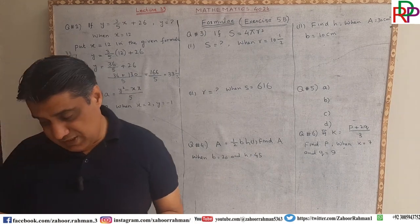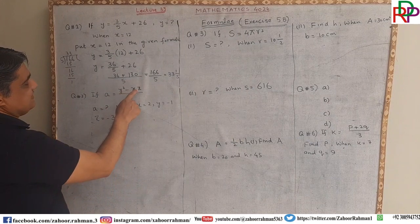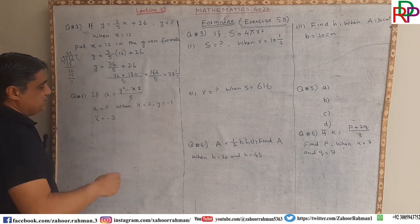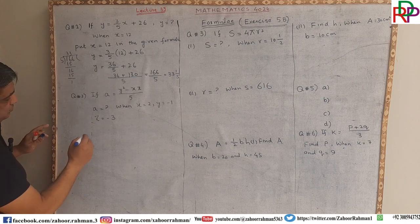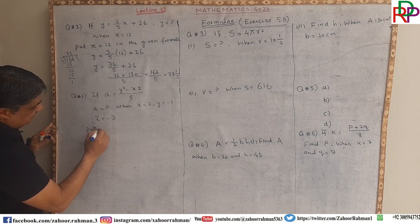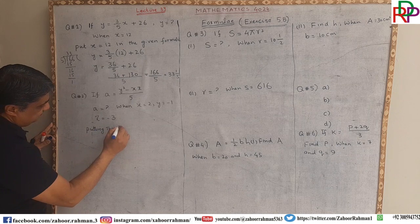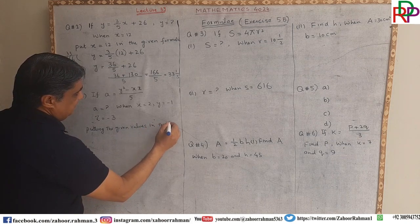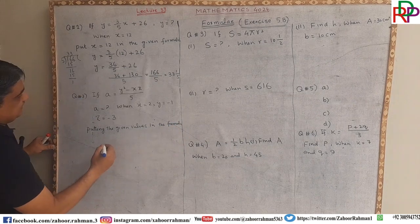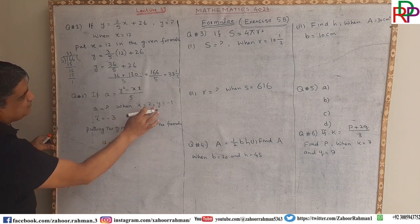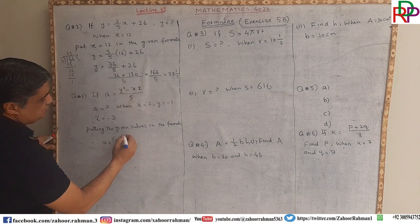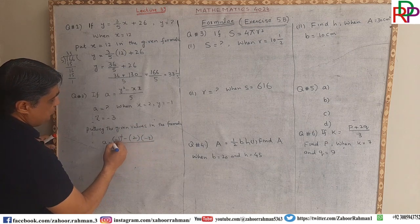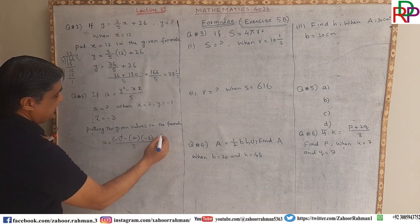The second question says: if a equals y squared minus xz all divided by 5, find the value of a when x equals 2, y equals minus 1, and z equals 3. Putting the given values in the formula: a equals minus 1 whole squared minus 2 times 3 all divided by 5.